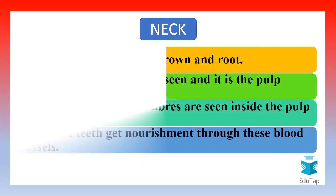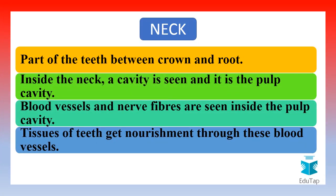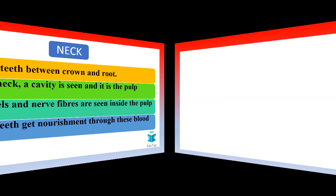The neck is that part of the teeth found between the crown and the root. Inside the neck we can see a cavity which is the pulp cavity. The blood vessels and nerve fibers are seen inside the pulp cavity. The tissues of the teeth get their nourishment through these blood vessels only, so this part is very much essential for good health of the teeth.